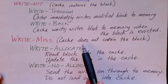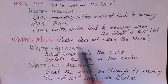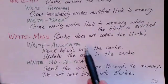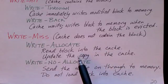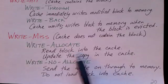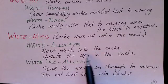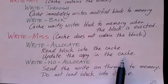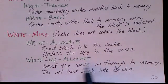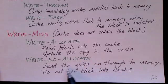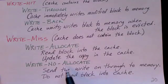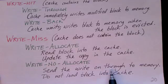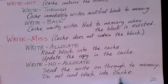If the write is to a block that's not in the cache, there are two choices: write allocate and write no allocate. With write allocate, the cache reads the block from memory, puts it into the cache, and then updates the copy in the cache. With write no allocate — sometimes called no write allocate — the cache does not load the block into cache memory; instead it just forwards the write right through to memory, updating the data in memory without copying that block into the cache.